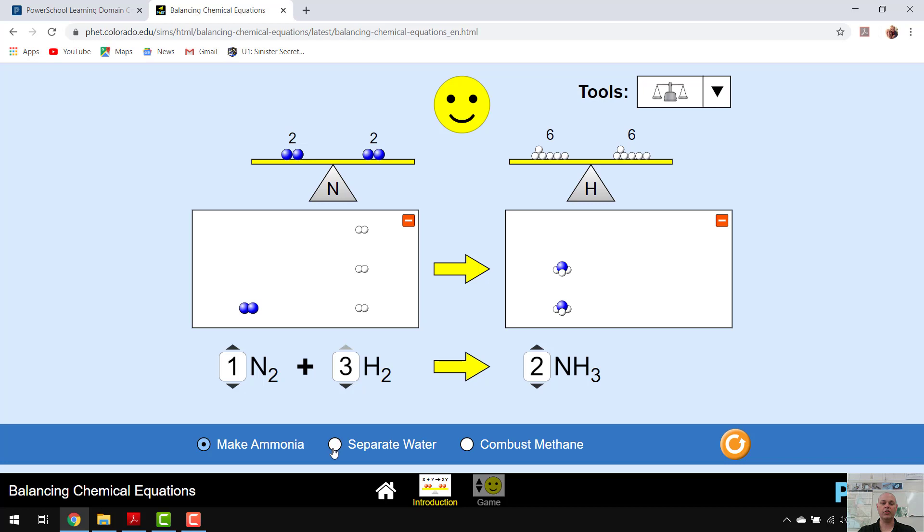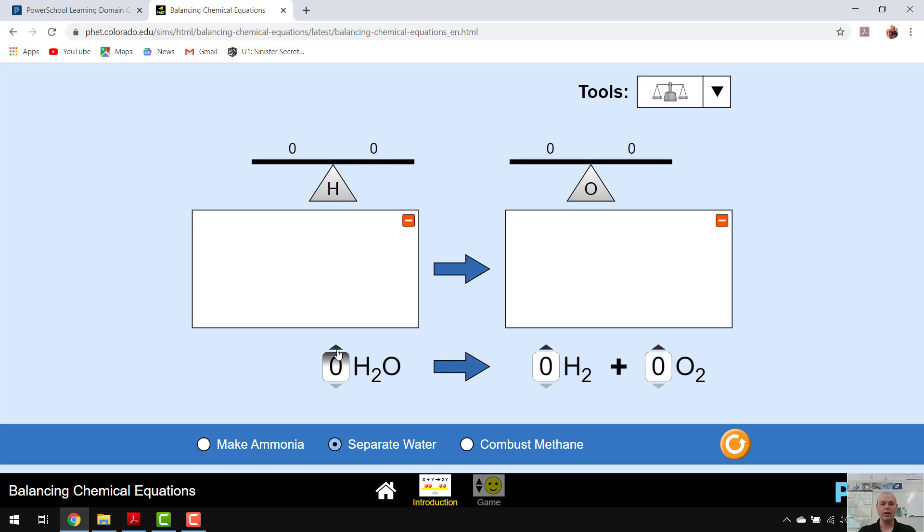Let's look at another one. So the next one is separate water. I'm going to go ahead and start off with one in each of these. I have my balance tool. My hydrogens right off the bat are balanced, but my oxygens are not. I see that on the left side I have one oxygen. On the right side I have two oxygens. So what I'm going to need to do is increase the number of moles here. Now two times the one oxygen, that gives me two oxygens on this side, and I have two oxygens on the right side. And you can see that we're balanced on the oxygens.